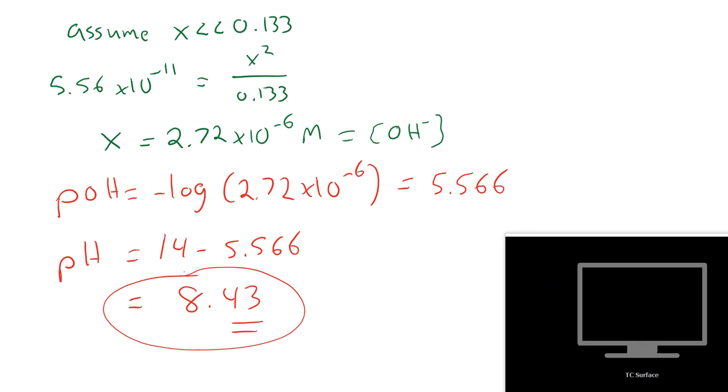So this is how we find the pH at the equivalence point. We react all the acid, all the base. Find out how much base we have. And then use an ice table to find out the pH. I hope this video was helpful. Thanks.